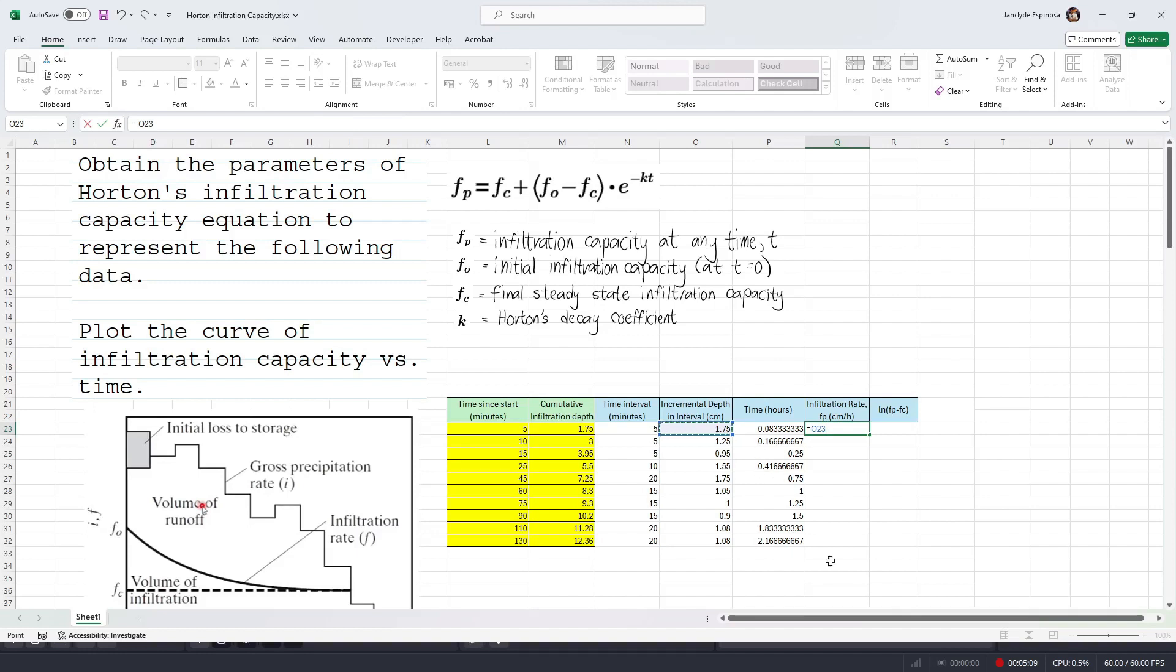Now, for the infiltration rate, we're gonna divide the incremental depth by the time interval in hours. So this means that we're gonna convert the time interval in minutes into hours. And so, just to show you the conversion, why we multiplied it by 60, we first have the infiltration rate as cm per minute, considering our initial data. However, we're gonna convert minutes into hours by multiplying the expression by 60 minutes is to 1 hour.